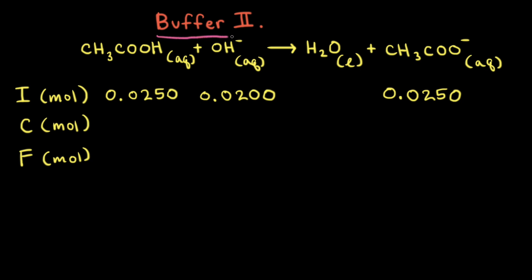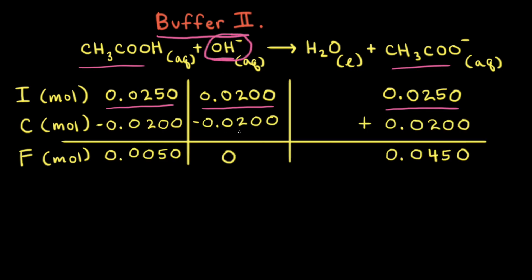Next let's calculate the pH of buffer 2 after the addition of the hydroxide anions. The initial moles of acetic acid in buffer 2 is equal to 0.0250 moles, which is the same as the acetate anion at 0.0250 moles. The hydroxide anions added is 0.0200 moles. Since hydroxide anions are the limiting reactant, all 0.0200 moles are used up. With the one-to-one mole ratio, 0.0200 moles of acetic acid is consumed, leaving 0.0050 moles. The acetate anion gains 0.0200 moles for a final amount of 0.0450 moles.